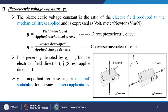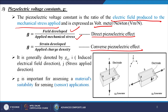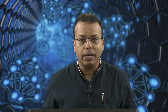The third parameter is the piezoelectric voltage constant g. It is the ratio of the electric field produced to the mechanical stress applied, expressed as volt·meter per Newton. It is denoted by small g — representing the field developed by applied mechanical stress (direct effect), or strain developed by applied charge density (converse effect). It is denoted by g_ij, where i is the induced electrical field direction and j is the stress applied direction. g is important for assessing a material's suitability for sensor applications.